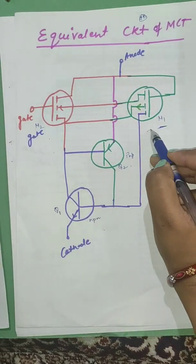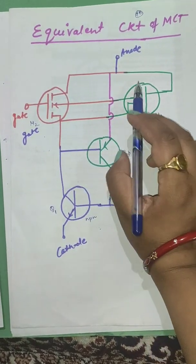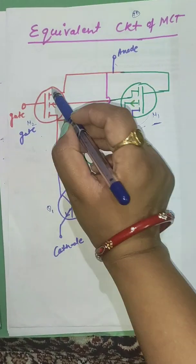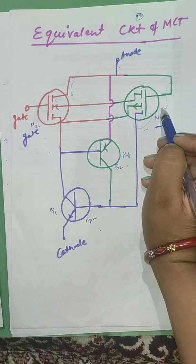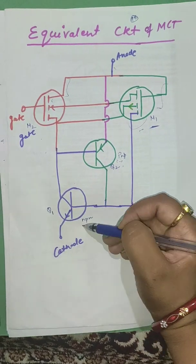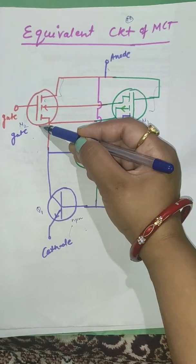M1 is N channel MOSFET and M2 is P channel MOSFET. And two transistor PNP and NPN are there. It is connected like this. PNM2, M2 and anode is connected by the MOSFET and PNP and NPN is connected to M2.